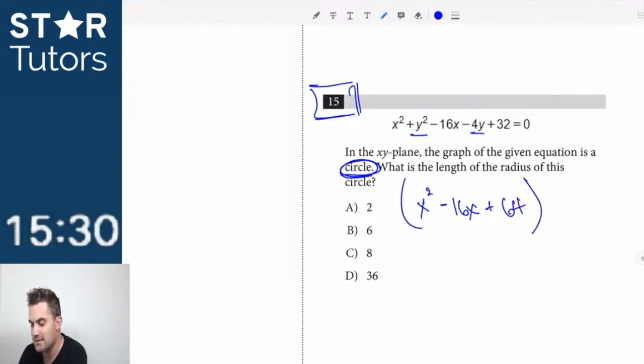Don't forget guys, that if you add 64 to one side, you got to add 64 to the other. So 0 plus 64 is 64.